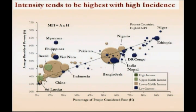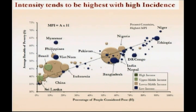Another question we have is that because the distinctive aspect of MPI is to look at intensity, we were curious how head count and intensity of poverty relate. You might think that in countries where there is a very high percentage of people who are poor, perhaps the intensity is lower. Unfortunately, and quite sadly, this graphic depicts the opposite. On the bottom axis is the head count, with Niger having the highest head count. On the vertical axis is the intensity, and Niger also has the highest intensity of poverty.